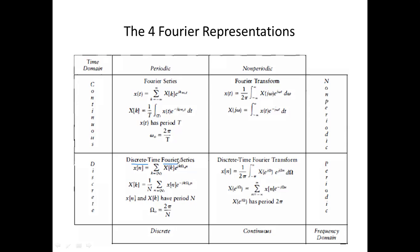The remaining two things in Fourier analysis comprising module four are: the Fourier Transform, which is for continuous-time non-periodic signals, and the Discrete Time Fourier Transform (DTFT), which is for discrete-time non-periodic signals.